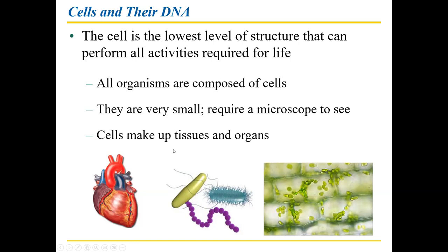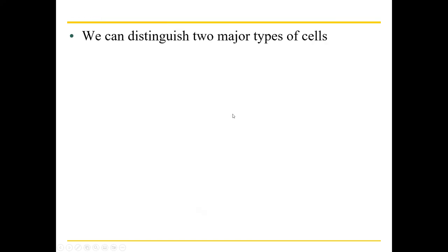Cells make up organs and tissues — for example, tissues such as muscle tissue, nervous tissue, and organs like the heart are made up of cells. We can distinguish two major types of cells. The first is called prokaryotic, which are very simple. The other are called eukaryotic, which are more complex. We are eukaryotes; bacteria are prokaryotes. We'll be talking more about these in just a moment.